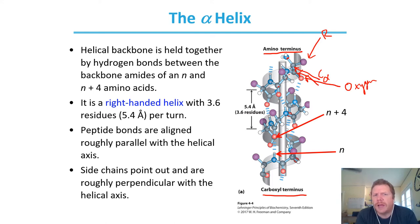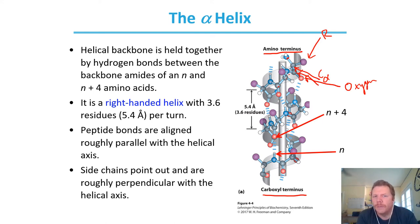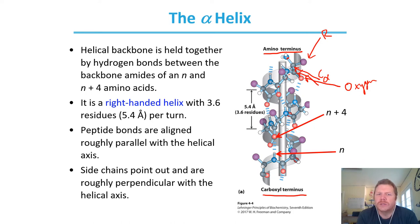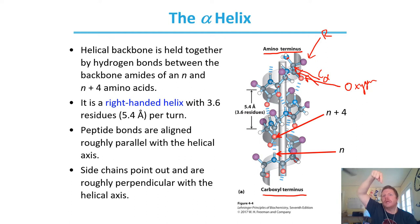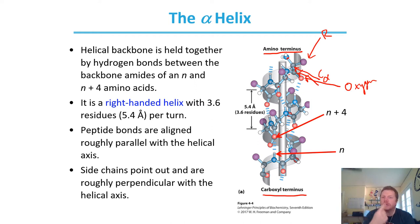The helical backbone is held together by hydrogen bonds between the backbone amides of an N and N+4 amino acids. It is a right-handed helix with 3.6 residues per turn. Think about it as starting at the 12 o'clock position — that peptide bond wraps around, and when it gets back to the 12 o'clock position, it takes approximately 3.6 residues for that turn.